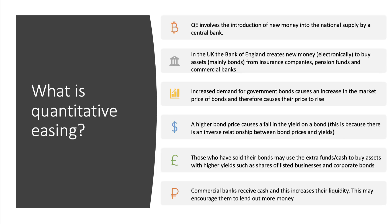Because there's an inverse relationship between the price of bonds and interest rates, that causes the yield on a bond — the rate of interest — to fall. Typically, those people who've sold their bonds, a commercial bank for example, are given extra cash or liquidity. A pension fund may sell some government debt to the Bank of England and use the funds to buy perhaps some shares of listed companies, corporate bonds, or property. Crucially, commercial banks receive cash from the sale of bonds to the Bank of England, which increases their liquidity.